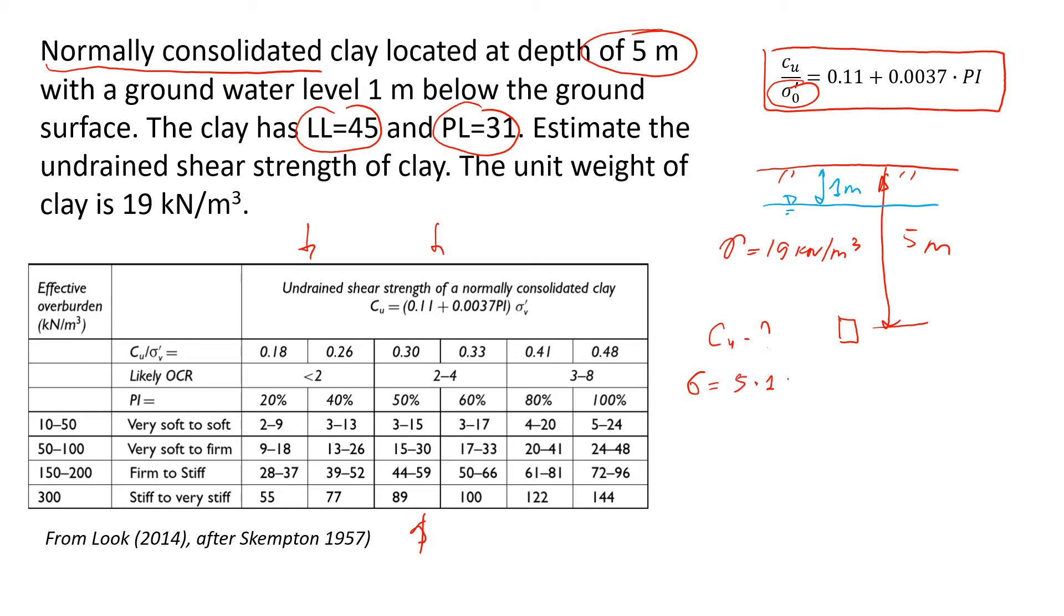Which is five meters times the unit weight of soil. That will give us 95 kilopascals.